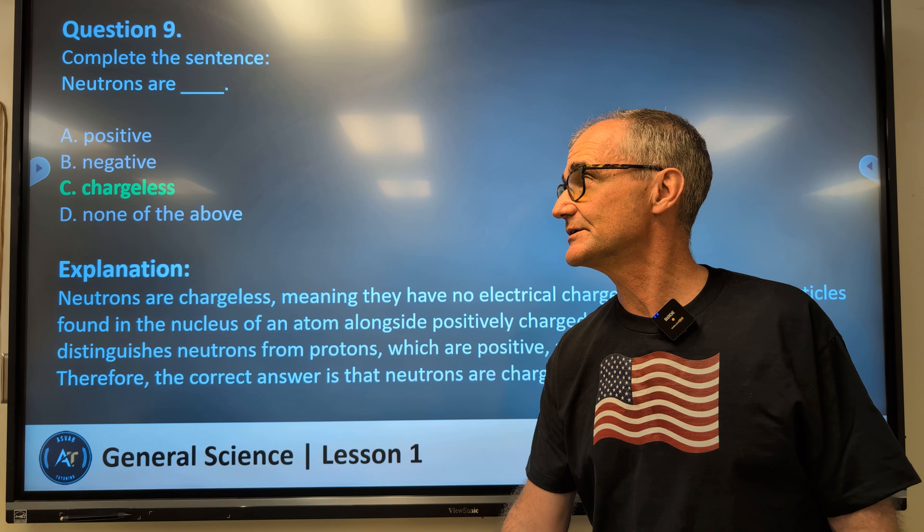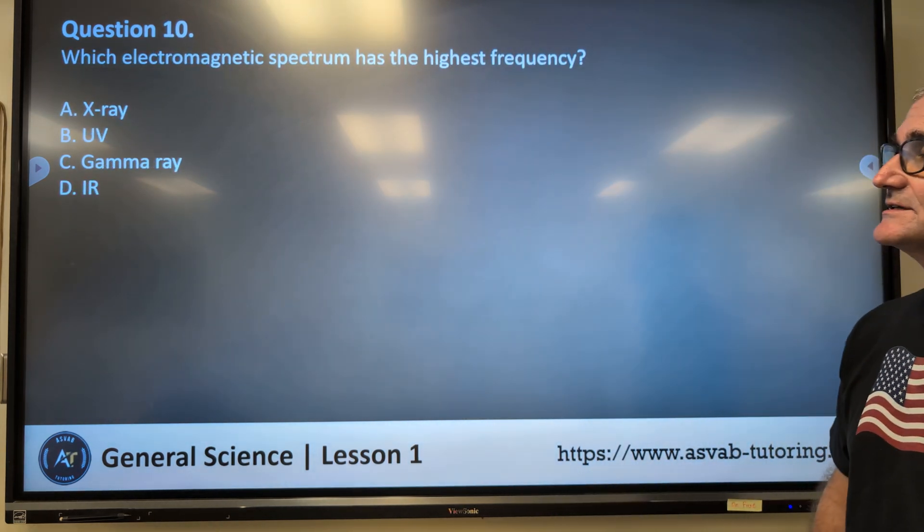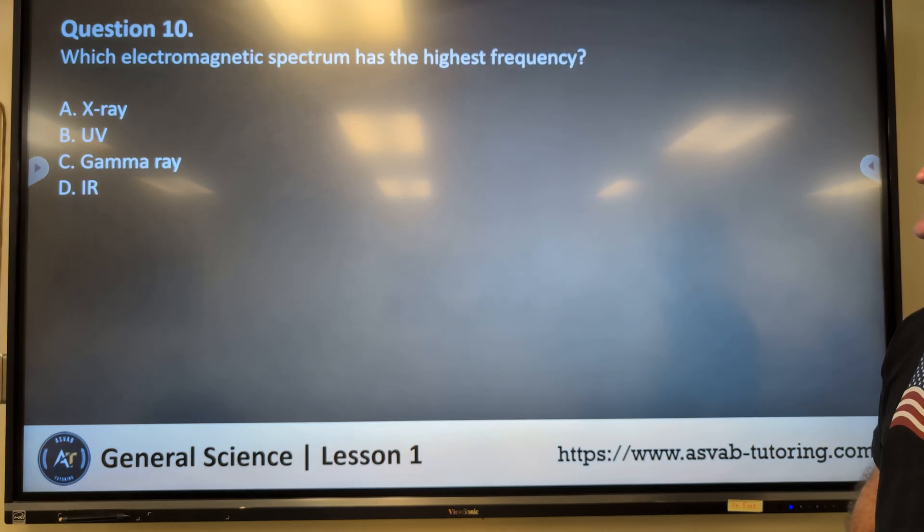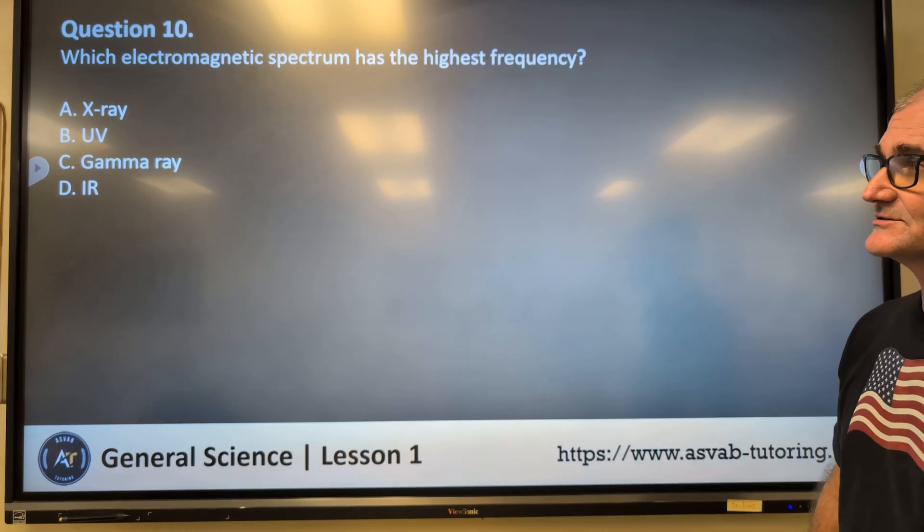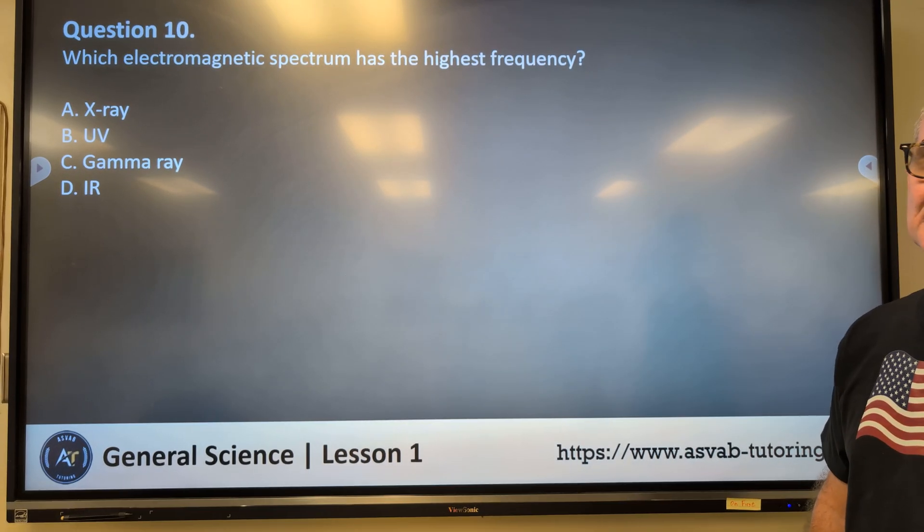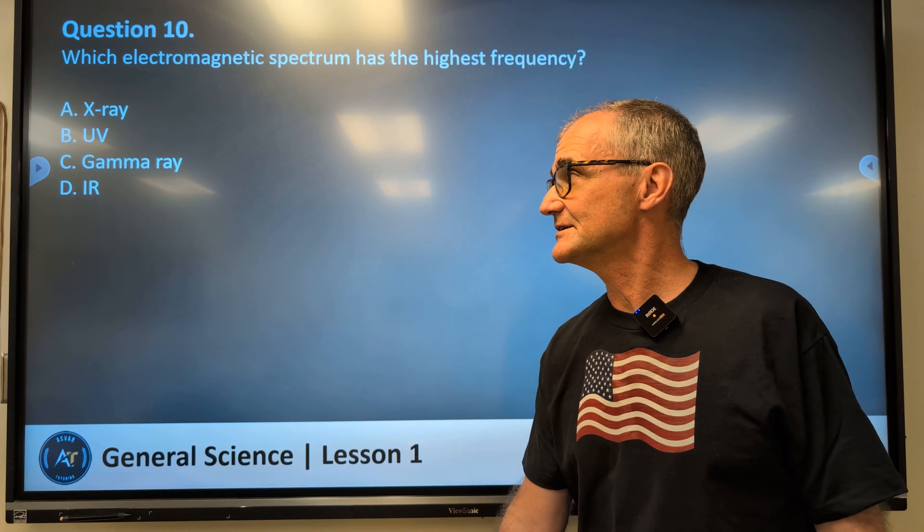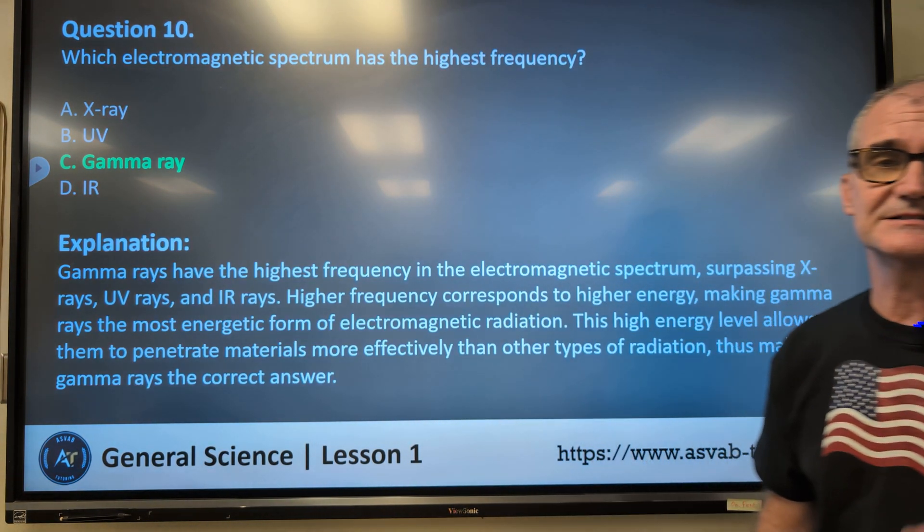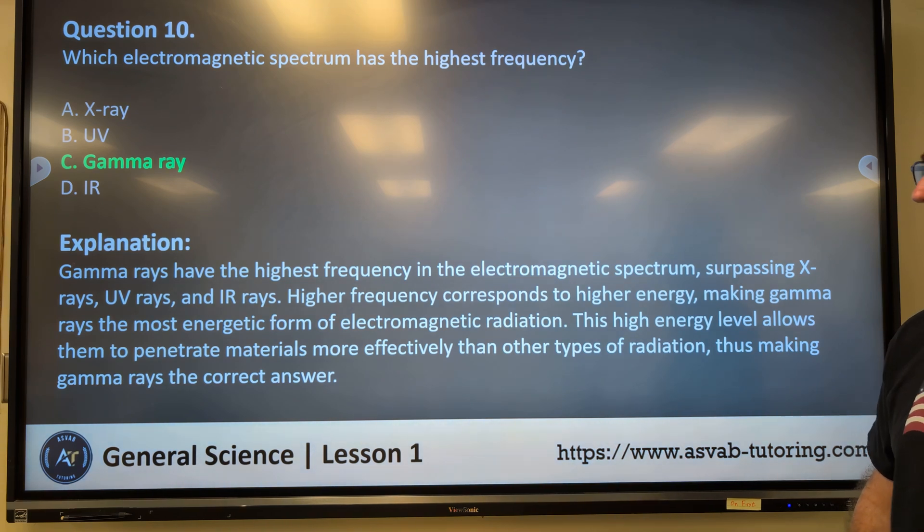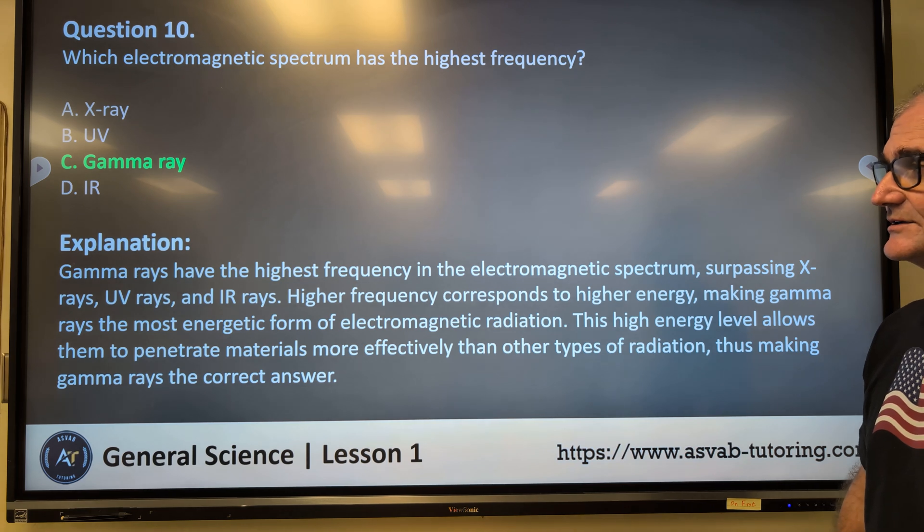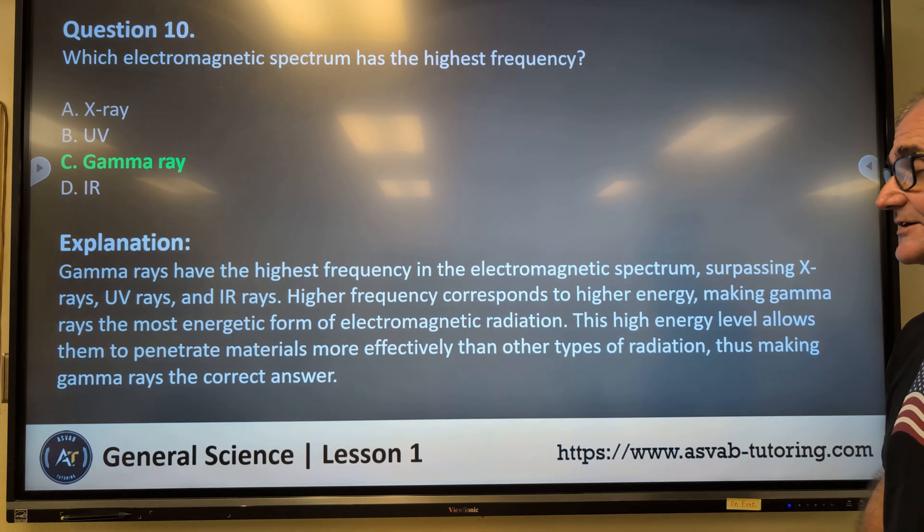Question number 10. Which electromagnetic spectrum has the highest frequency? X-rays, UV rays, gamma rays, IR. Correct answer number 10 is C, gamma rays. Gamma rays have the highest frequency in the electromagnetic spectrum, surpassing X-rays, UV rays, and IR rays. Higher frequency corresponds to higher energy, making gamma rays the most energetic form of electromagnetic radiation.